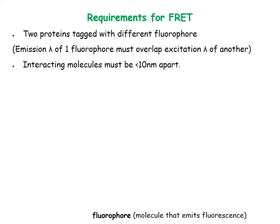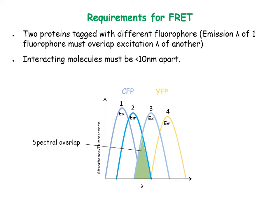A fluorophore is a molecule that emits fluorescence upon excitation with a specific wavelength of light. In the figure, the excitation and emission spectra of two fluorophores, CFP and YFP, are shown. Peaks 1 and 3 are the excitation wavelengths, and peaks 2 and 4 are the emission wavelengths. The green region shows that the emission spectrum of CFP (peak 2) overlaps with the excitation spectrum of YFP (peak 3).